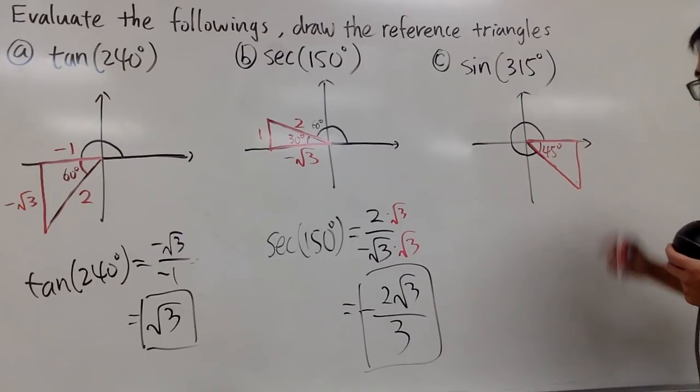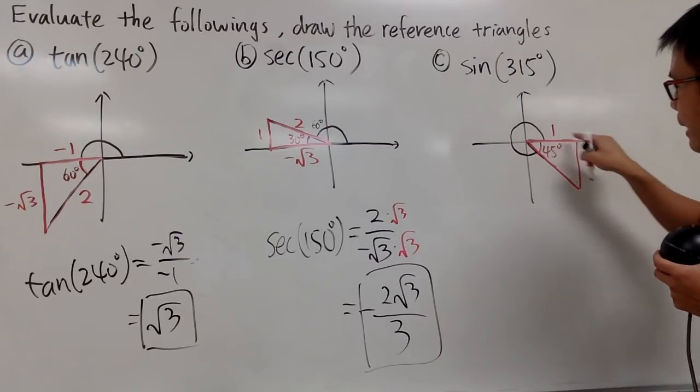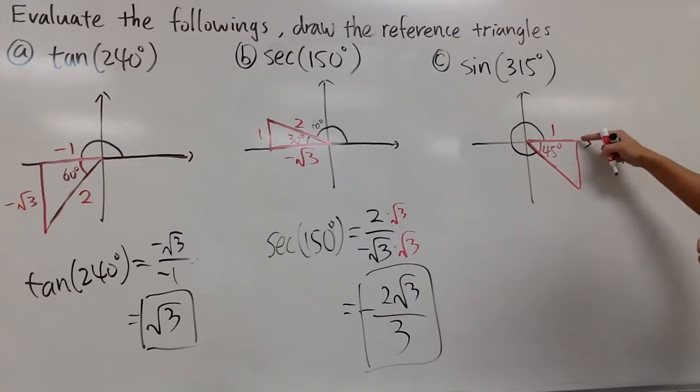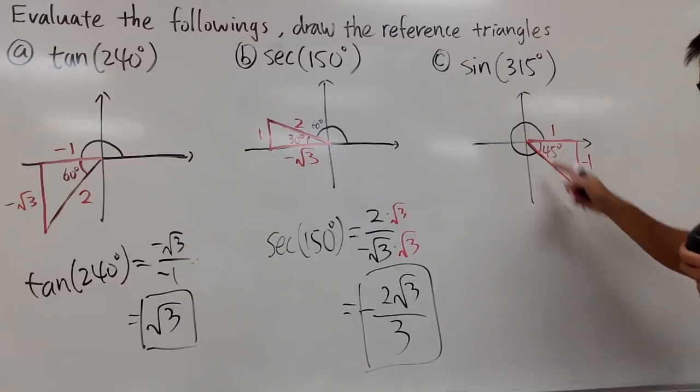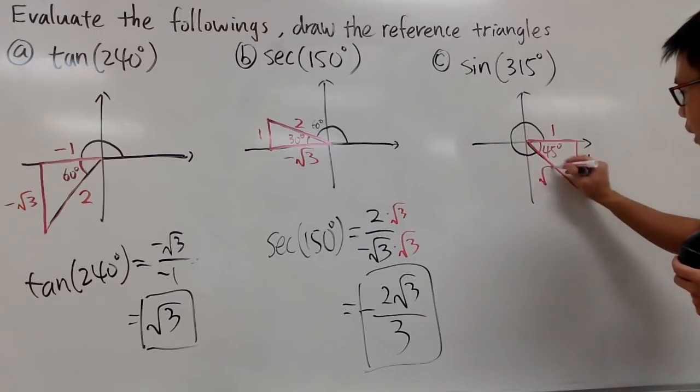Anyway, remember the ratio of the sides. That's the most important part. 45, 45, 90. The ratios are 1, and this is positive 1 because it's on the right-hand side. This right here is 1, but it's downwards, so it's negative 1. And then the hypotenuse right here is square root of 2.